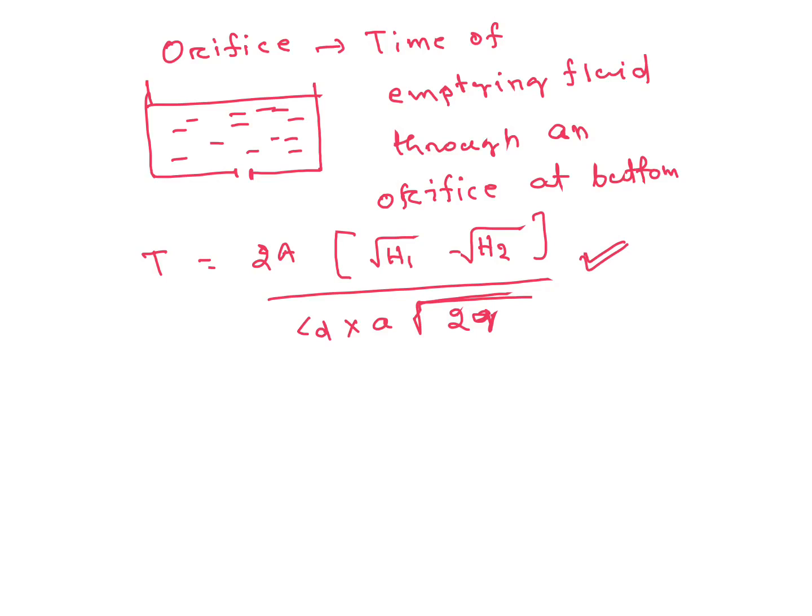Then Pitot tube. Pitot tube measures stagnation pressure. From stagnation pressure we can calculate the velocity of flow, so this is very important. Many times they ask stagnation pressure = dynamic pressure + static pressure. This formula you have to use.